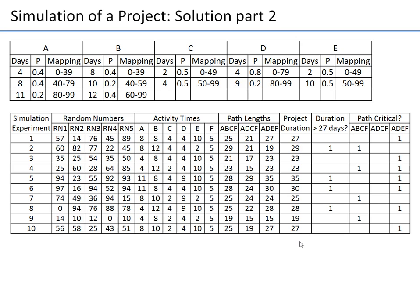To find the expected project duration, I compute the average of the project duration column across all 10 experiments, which gives 26.6 days. This is our best estimate based on those 10 experiments. Of course, with such a small number of experiments, we could also compute a 95% confidence interval.